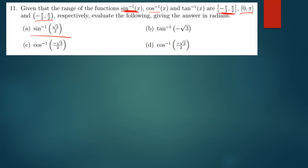For sine inverse of x, we have to get answers in this range. For cos inverse of x, the answer is supposed to be in this range. So the first one is sine inverse of the root of 3 over 2. From the table of special angles, we know this to be 60 degrees.